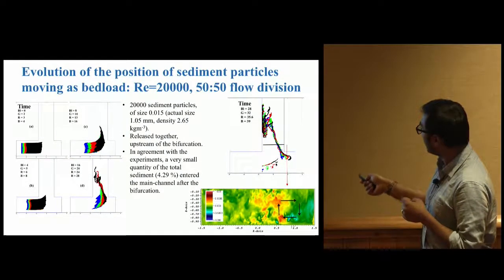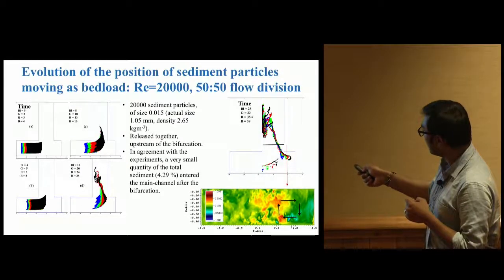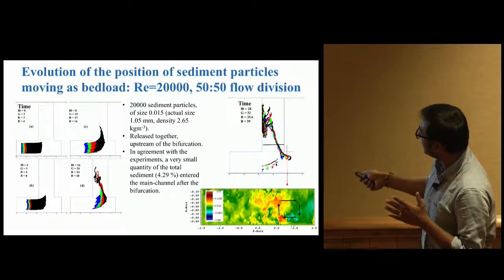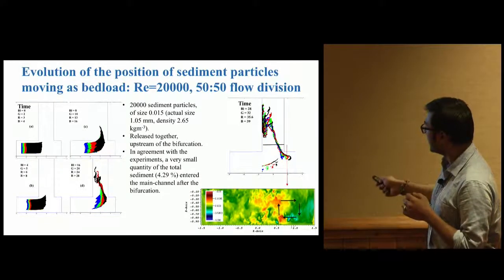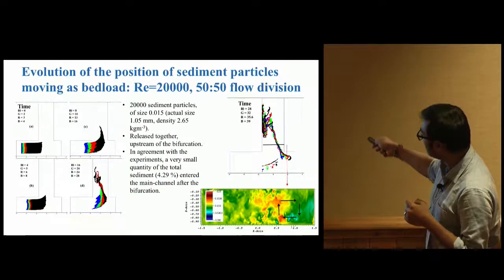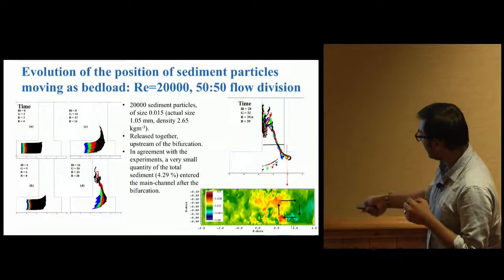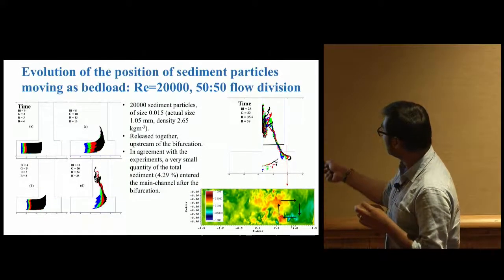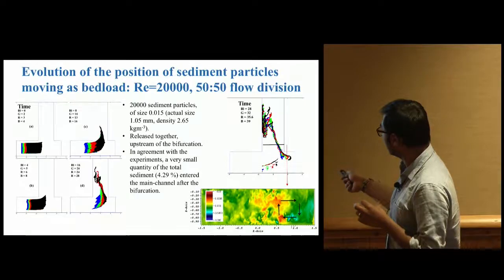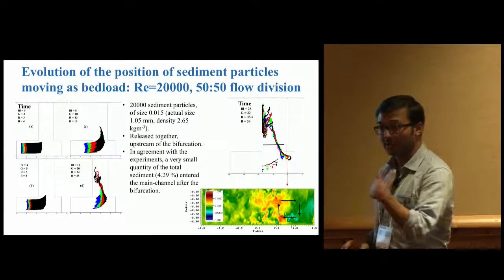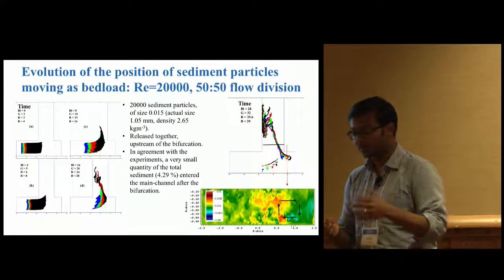Another interesting feature: after entering the lateral channel, sediment particles stick to the left side. Taking a cross section after the diversion, we find secondary circulation formation. Once sediment enters, it's pushed to the left side and gets stuck in the flow separation zone.